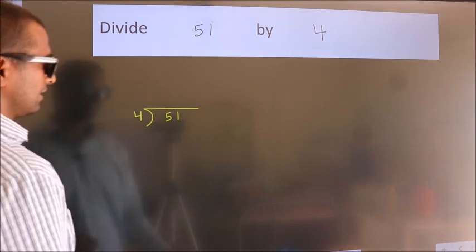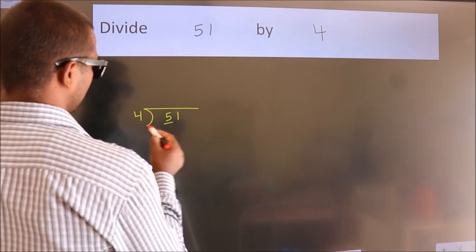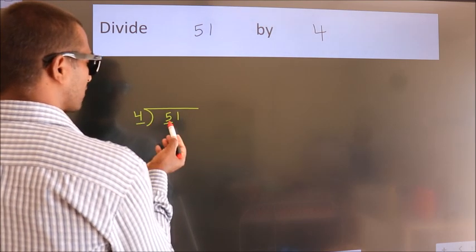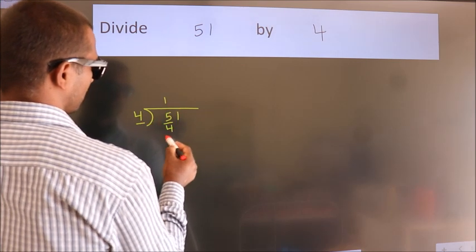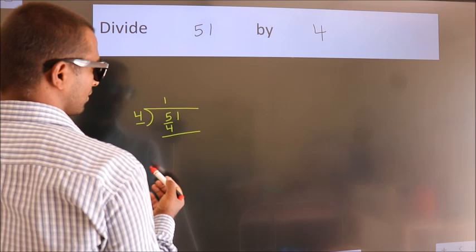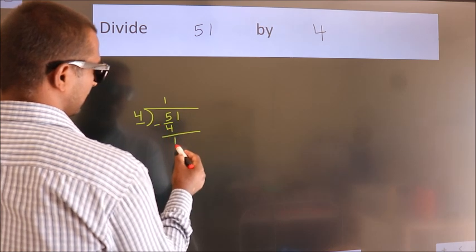Next, here we have 5, here 4. A number close to 5 in the 4 table is 4 once 4. Now we should subtract. We get 1.